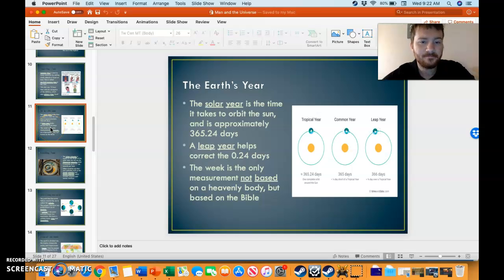Solar year, it's time it takes to go around the sun, approximately 365.24 days. And we use a leap year to help correct that. If we didn't have a leap year, eventually our summers would feel like winters and our winters would feel like summers. So the leap year is very helpful.